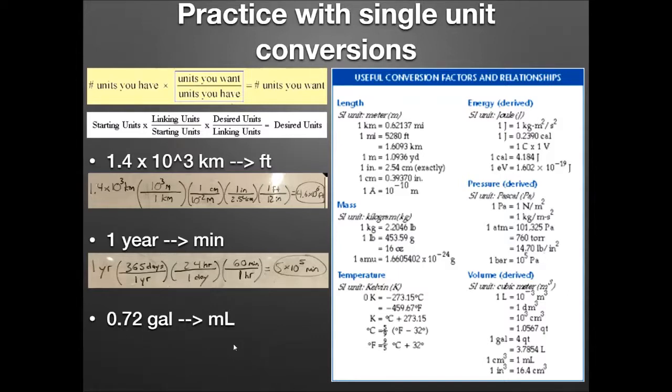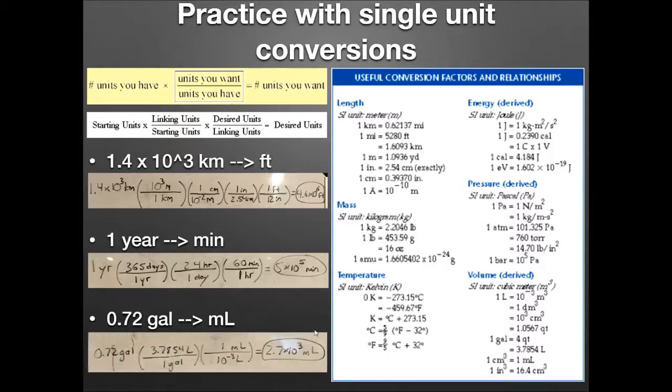Lastly, 0.72 gallons converted to milliliters. We haven't done a lot of volume units yet. Now you might need to look at this chart. If you look at the chart down here, one gallon equals 3.7854 liters. Bingo! That'll be our first conversion factor that we use.